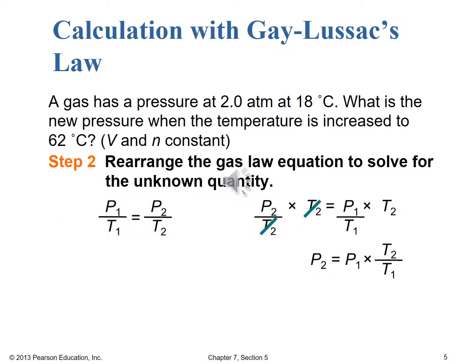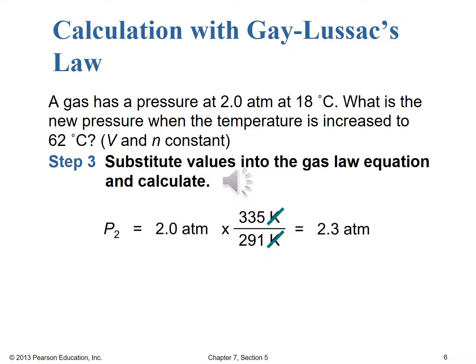Moving to step two, we rearrange the gas law equation to solve for the unknown. To isolate P2, we multiply both sides by T2, giving P2 = P1 × T2 / T1. Substituting values: P2 = 2.0 atm × (335 K / 291 K), which gives a final value of 2.3 atmospheres.